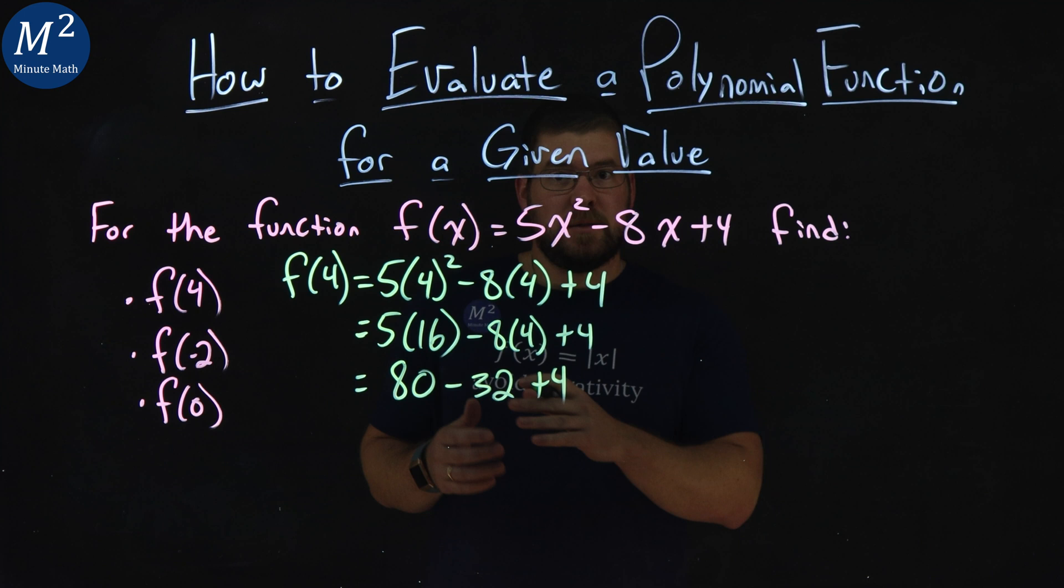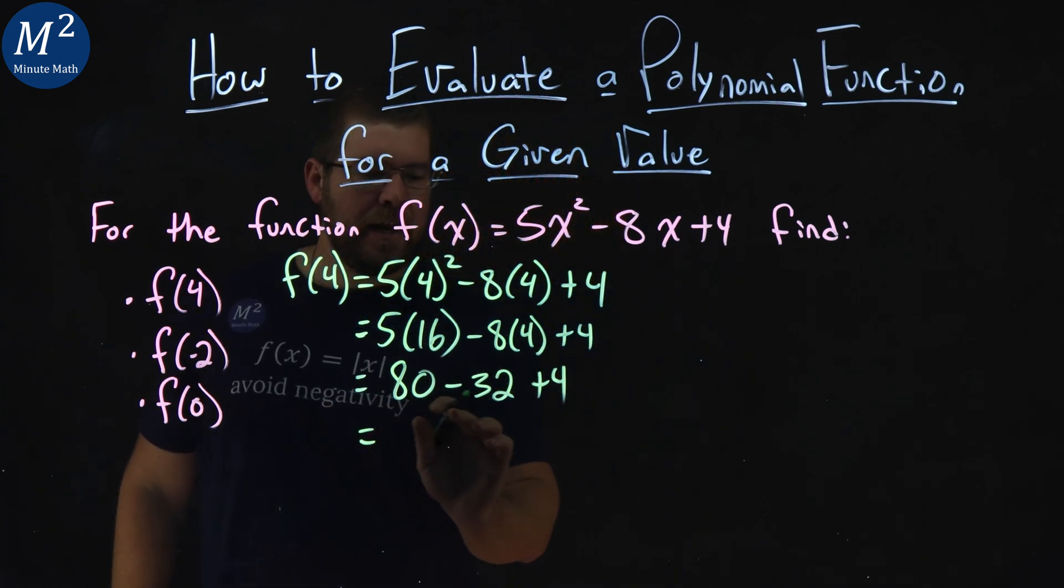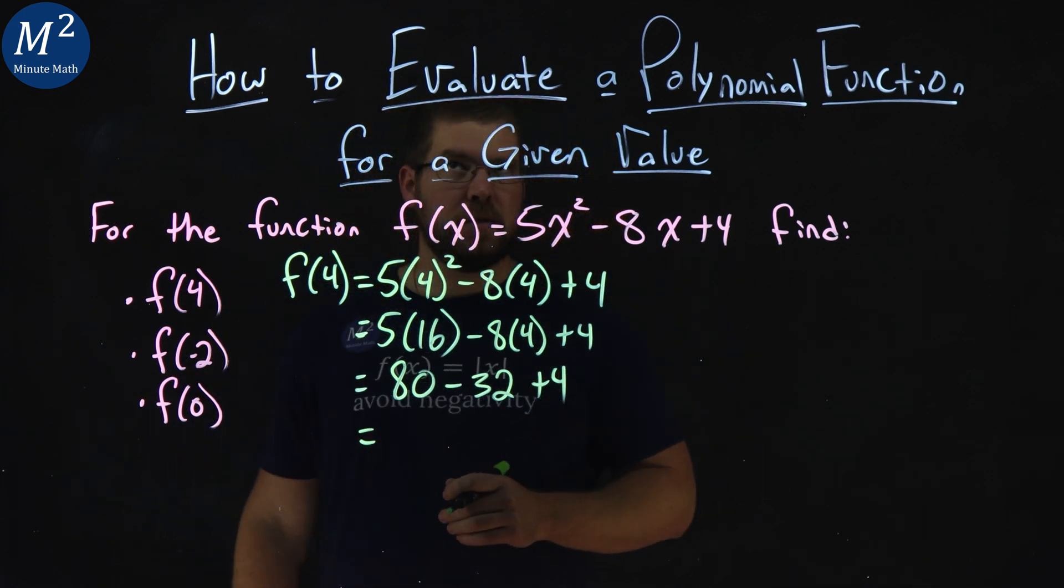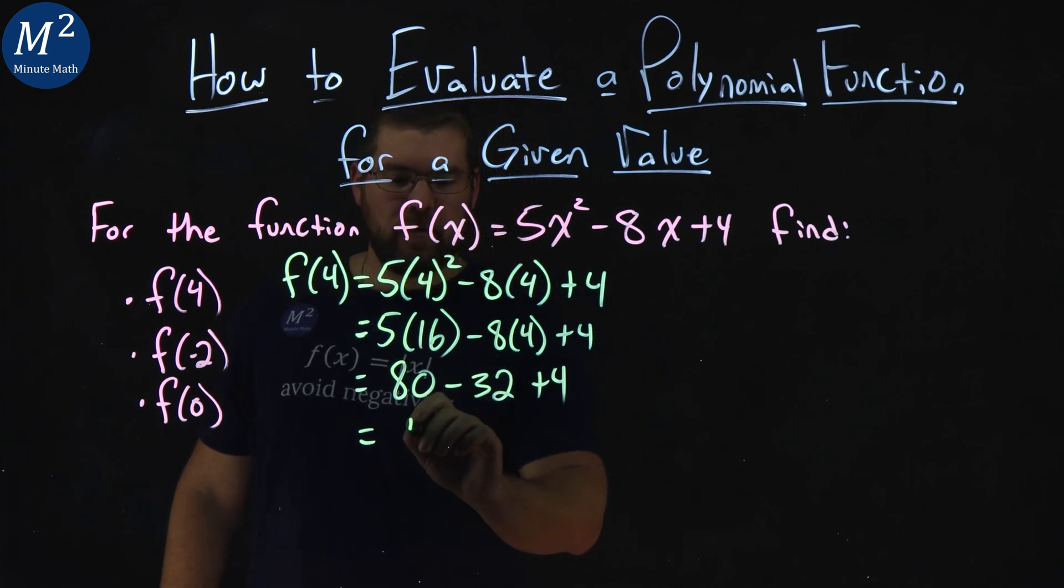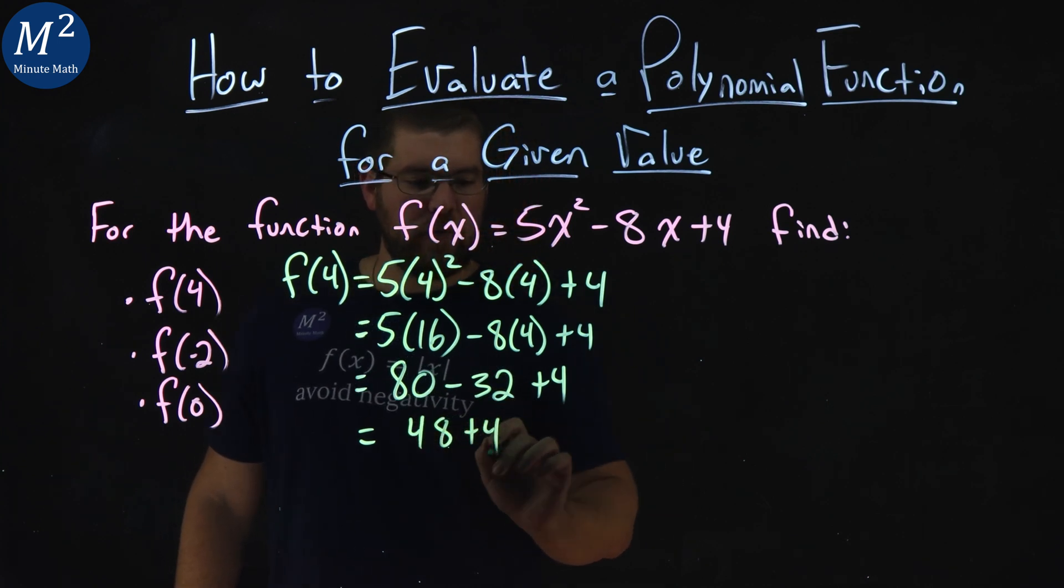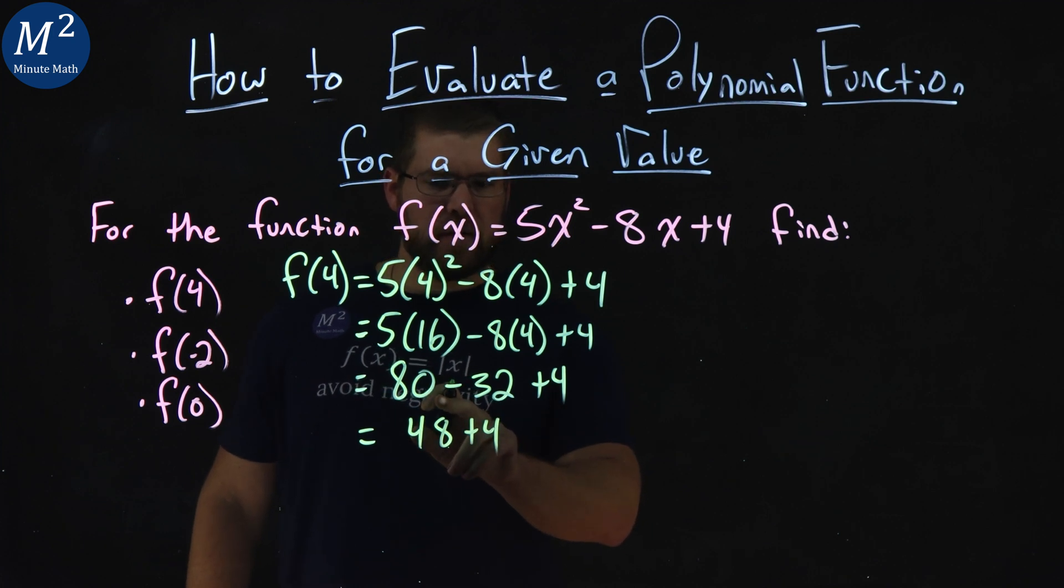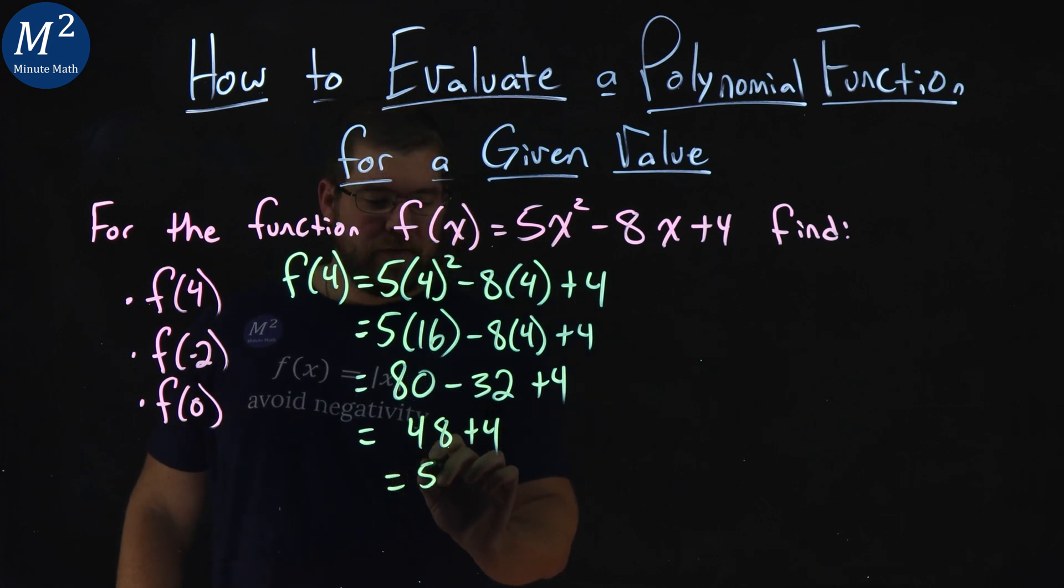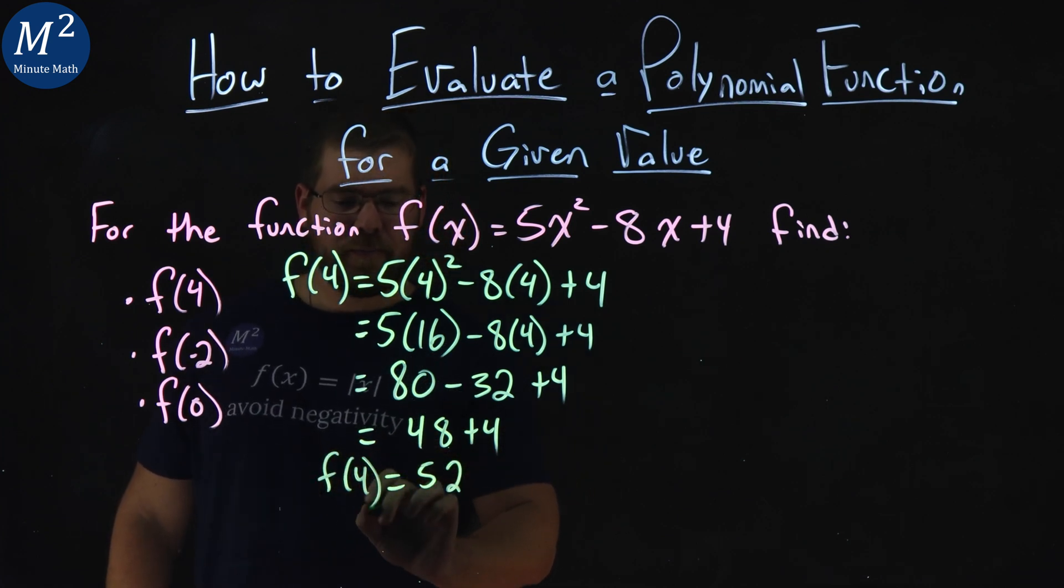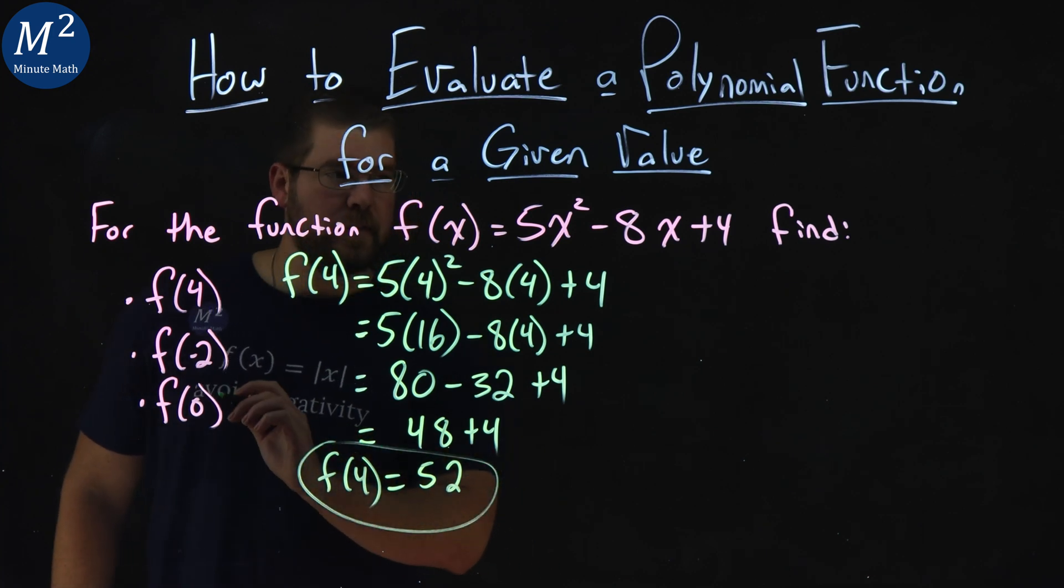Now, keep on going. We've got to simplify across the board. 80 minus 32, well, 80 minus 30 is 50, minus 2 is 48. So we have 48 here plus 4. 48 plus 4 is 52. So f(4) equals 52.